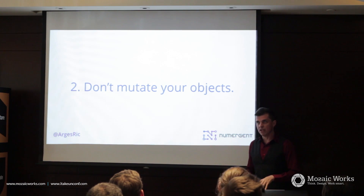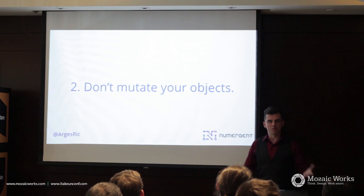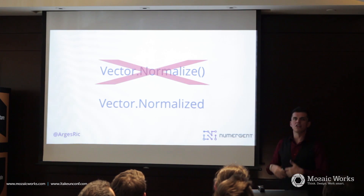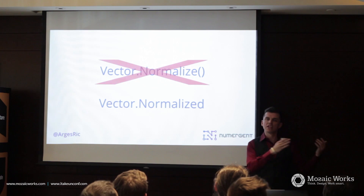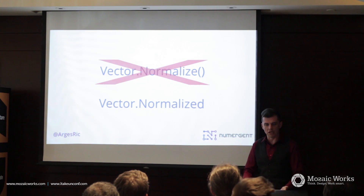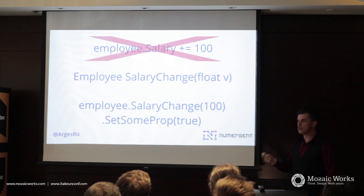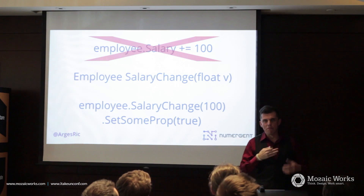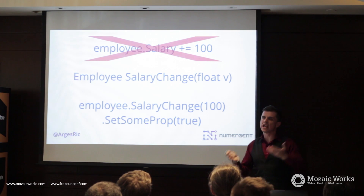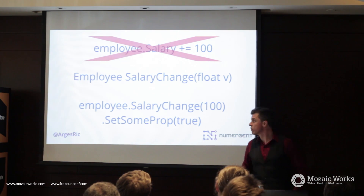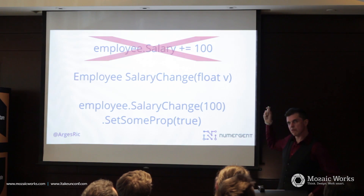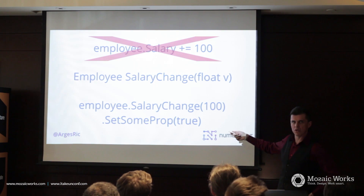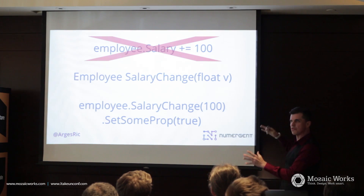The second principle is very straightforward: don't mutate your objects. Make sure they don't mutate themselves, and that nobody writes methods that mutate them. This is just an issue of discipline. For instance, if you have a vector class and you need to normalize the vector, don't do a method that's vector.normalize. Have a normalized property which returns a new instance instead of changing the values in place. If you have an employee and you need to change the salary, have a method that receives a salary change and returns a new instance with the changed salary. This also lets you chain your calls fluently — if this is starting to look like the builder programming pattern, you have the right idea.